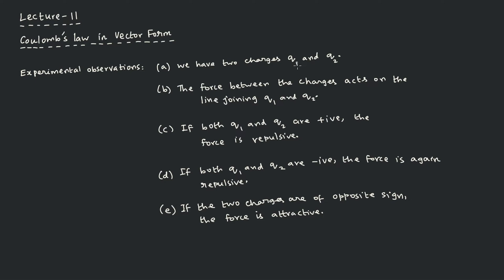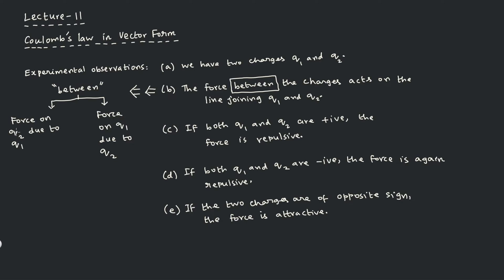Coulomb's law itself requires only two charges — that is point A. Now the word 'between' can be modified: the force is acting on the second charge because of the presence of the first charge. Or, option two: force acting on the first charge q1 because of the presence of the second charge.